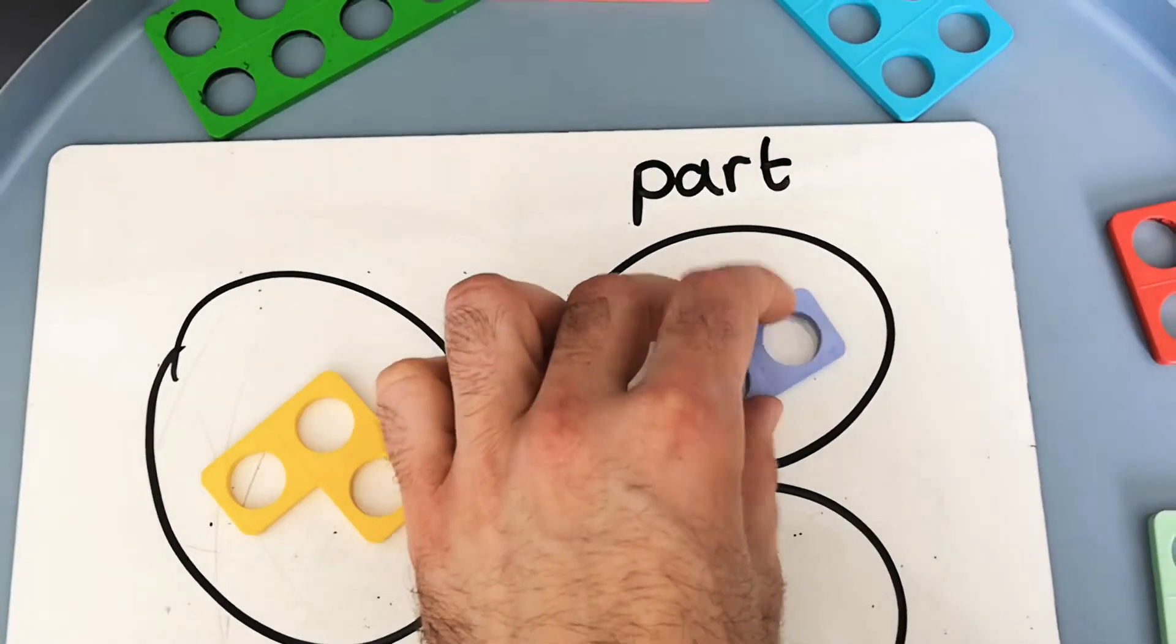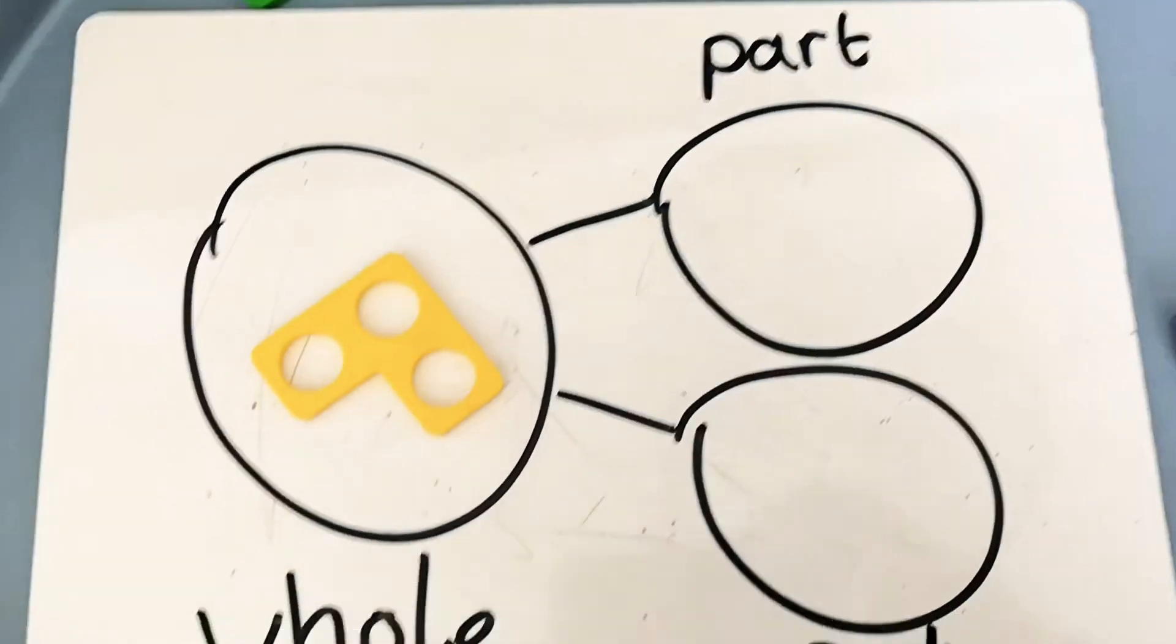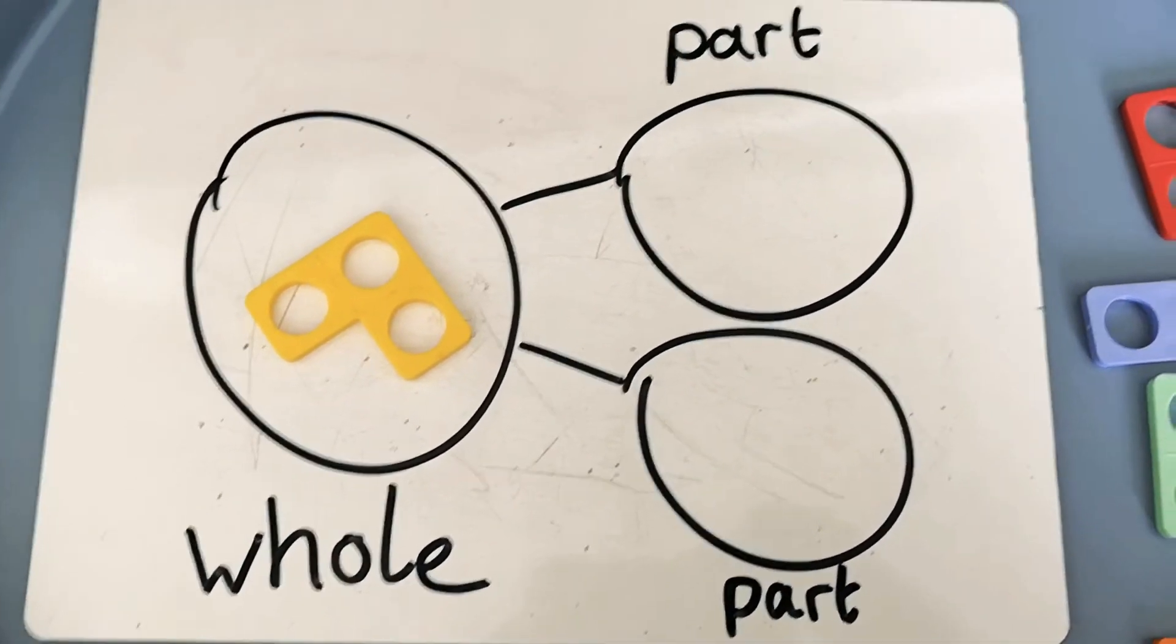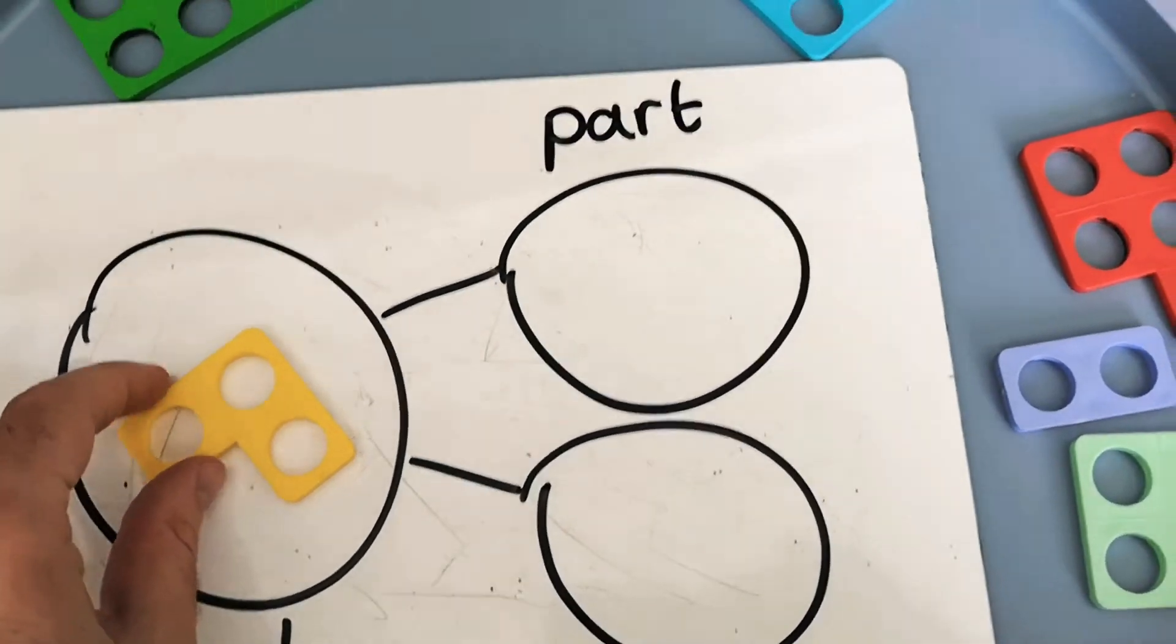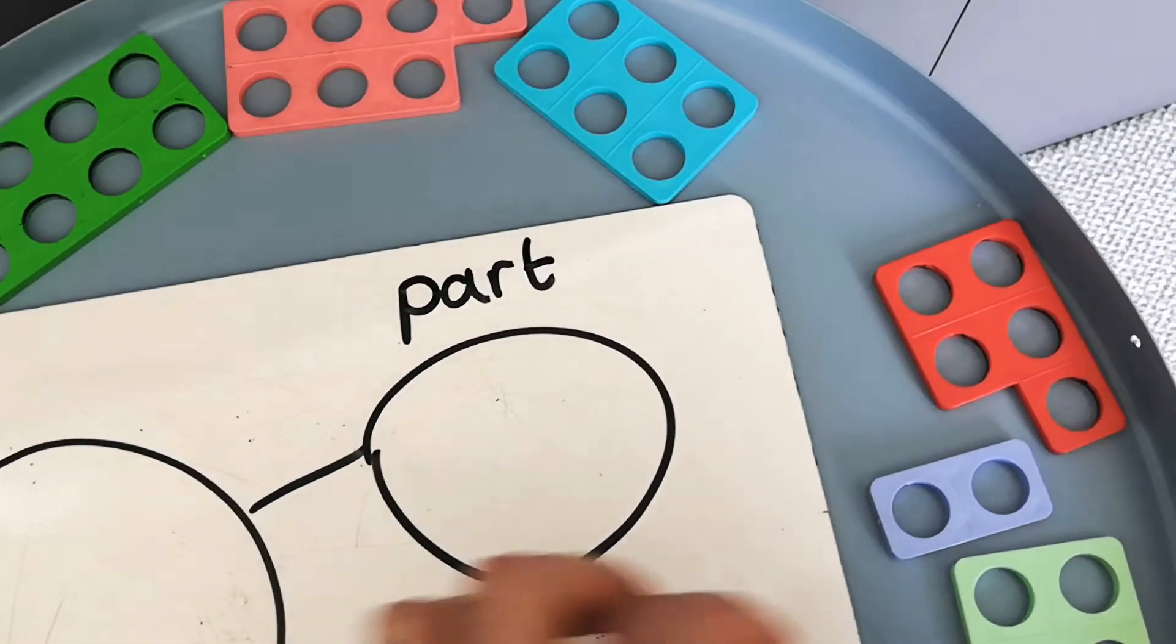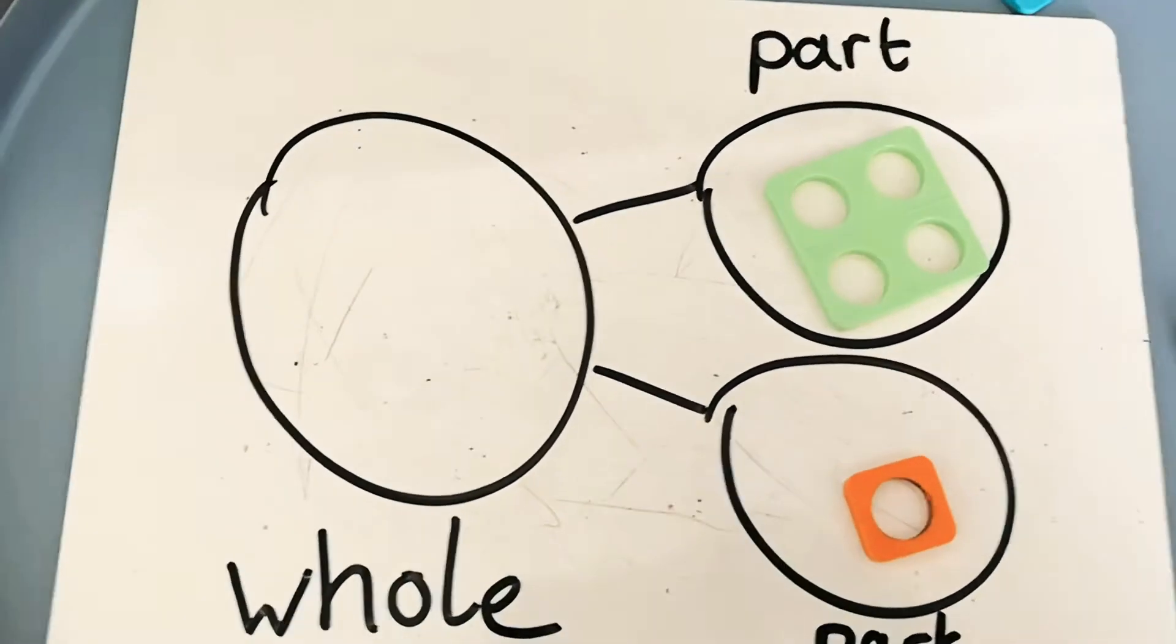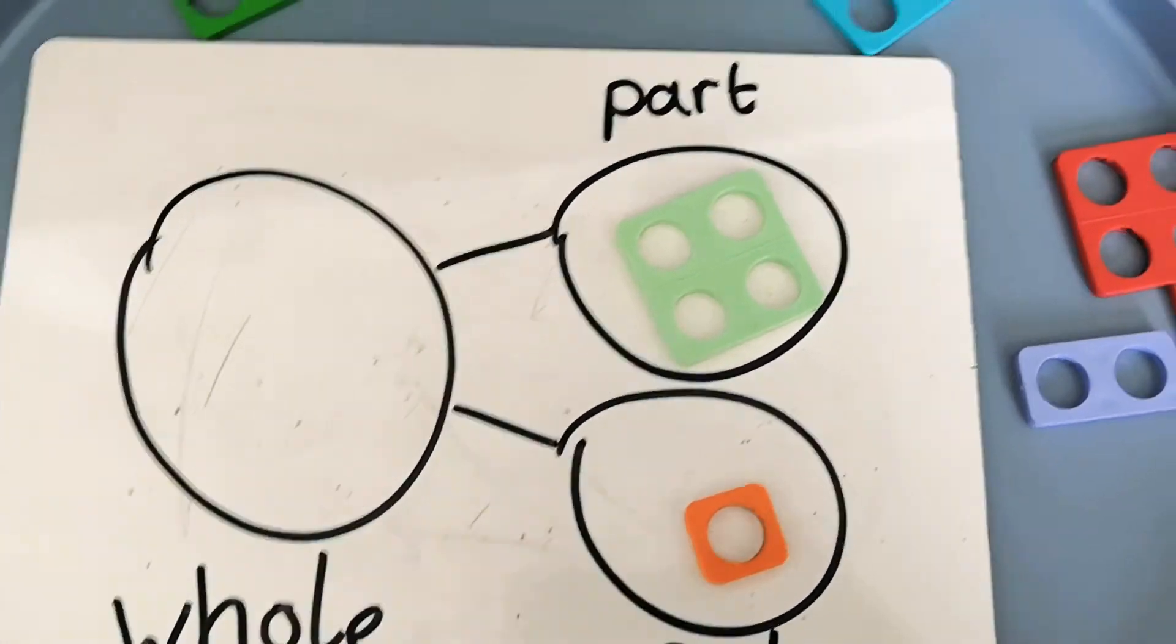We can use part-whole models to do lots of different questioning. So for example, if I have 3 there, what could my parts be? Or if I have 1 and 4 there, what do I know my whole is?